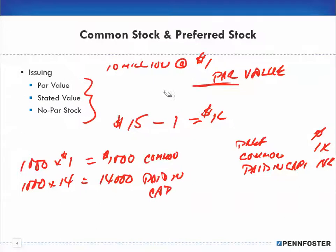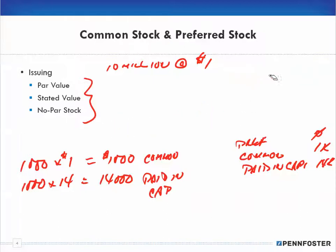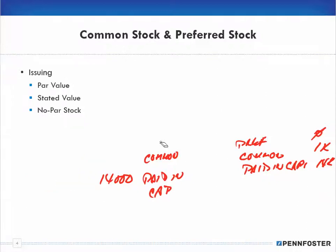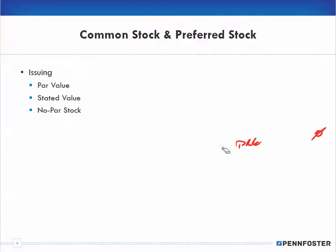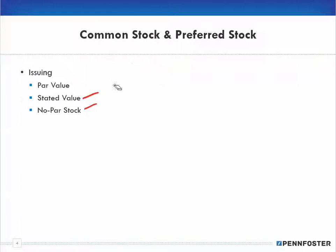Par value is what you authorize to sell the stock at — generally a very low number. You can sell the stock for a larger amount, and anything over par is your paid-in capital. You can have a dollar par and sell at a dollar, but you could also sell at stated value, where you're simply picking a dollar amount for the stock price without generating a separate paid-in capital account.